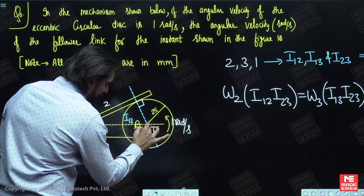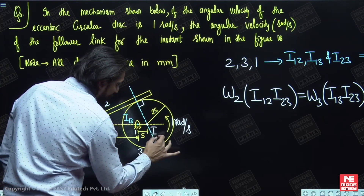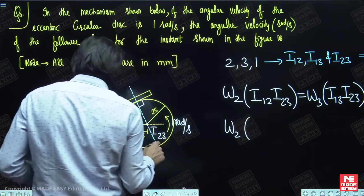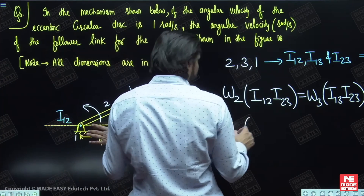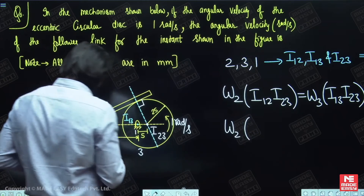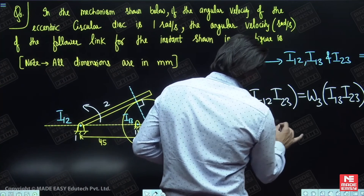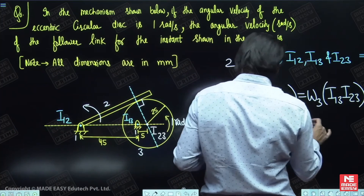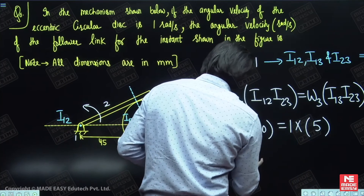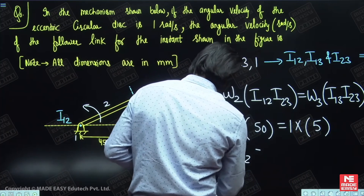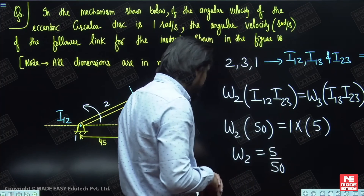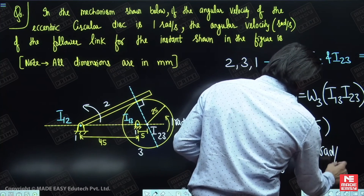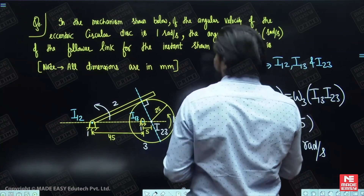This intersection point will be I₂₃. Now you can simply apply the formula: ω₂ × (I₁₂ to I₂₃) = ω₃ × (I₁₃ to I₂₃). The distance I₁₂ to I₂₃ is 45 + 5 = 50, and ω₃ is 1 radian per second. The distance I₁₃ to I₂₃ is 5. So ω₂ = 5/50 × 1 = 1/10 = 0.1 radian per second. I hope you liked this question — you may take a screenshot.